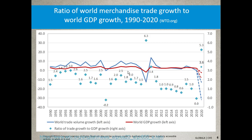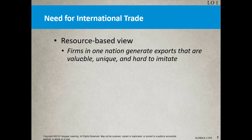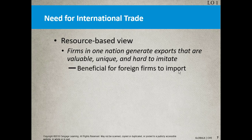Now let's talk about the need for international trade. I have all my hyperlinks at the bottom of the slides if you want to see the updates. The resource-based view: firms in one unique nation generate exports that are valuable — following the VRIO — and it's beneficial for foreign firms to import. When we're talking about world trade and countries, remember: we're not talking about countries officially trading with each other. Countries set policy, but we're talking about businesses — mostly multinationals — trading with customers from another country, whether B2B or B2G.